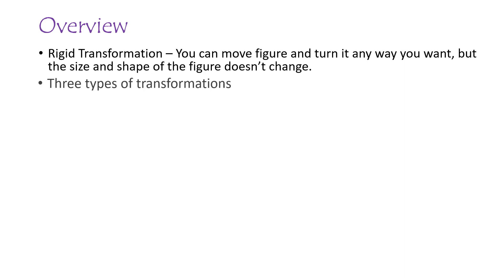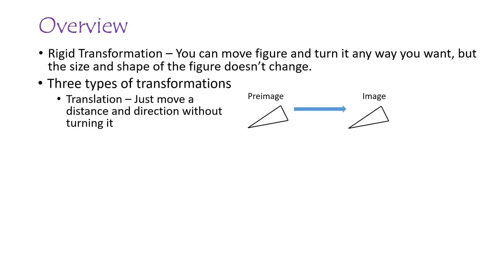There are three types of transformations. There's a translation, which is just moving the geometric figure some distance in a direction without turning it. The figure you start with is called the pre-image, and the figure you end up with after you do the transformation is called the image.